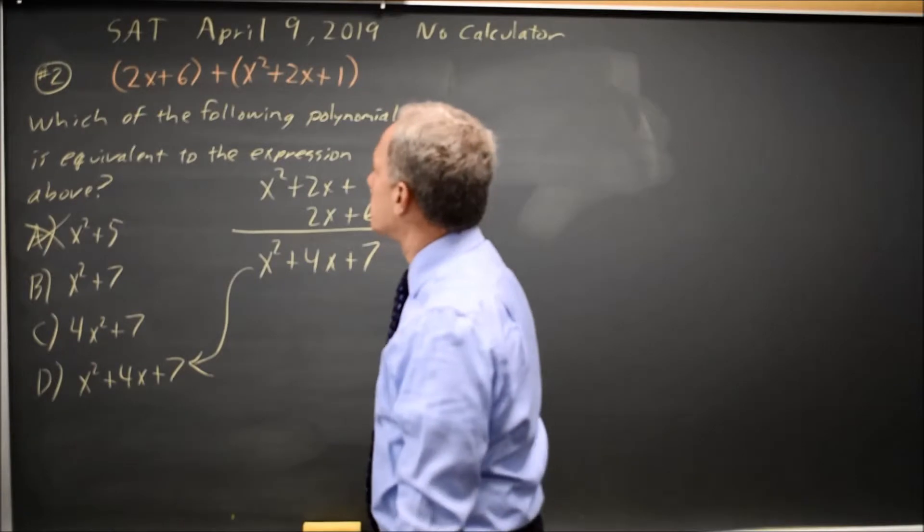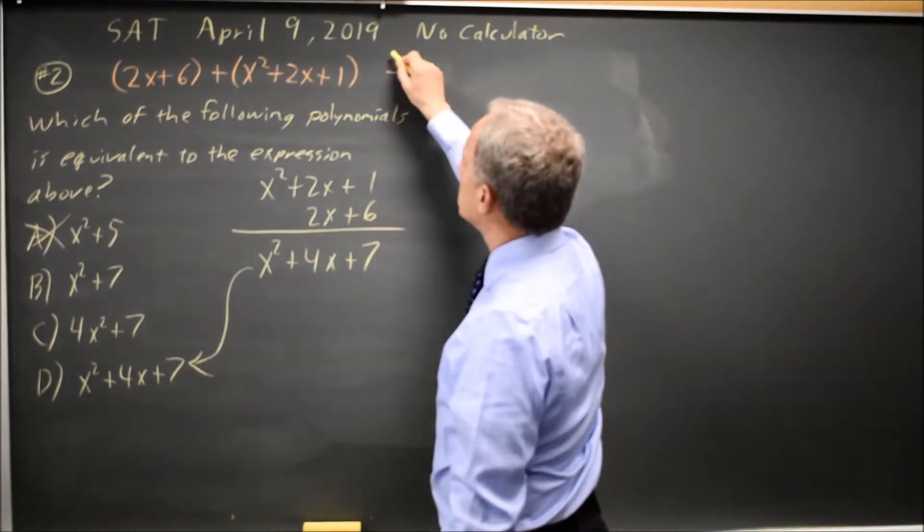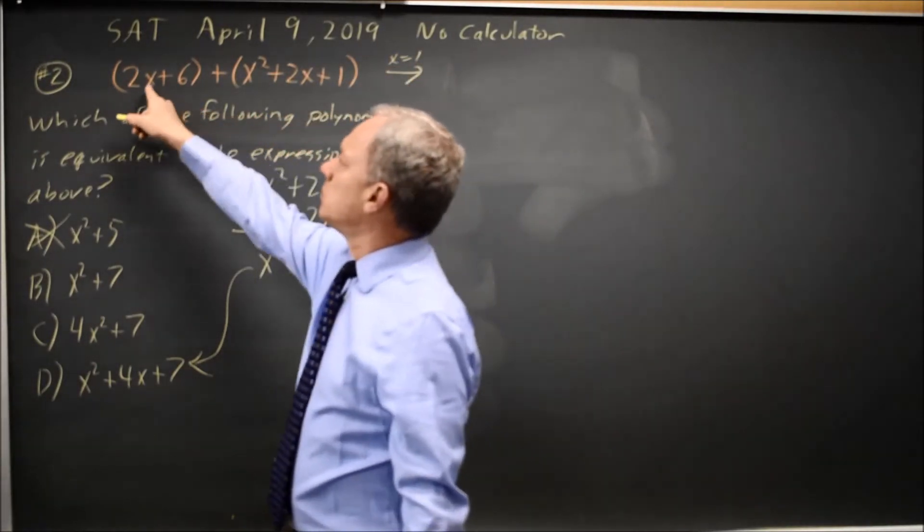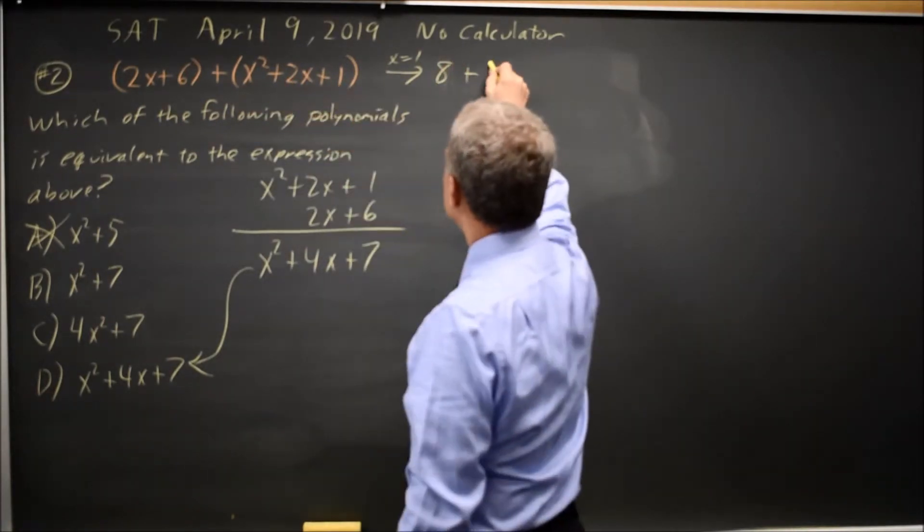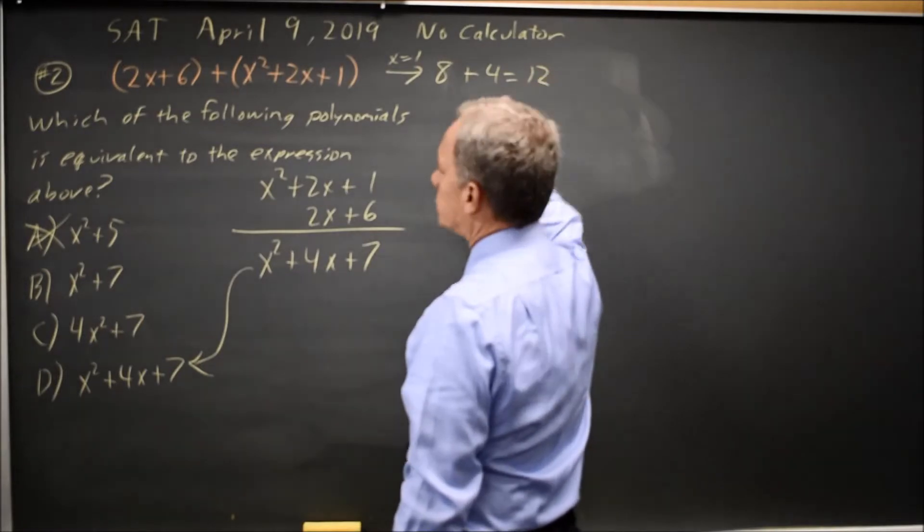Let's try x equals 1. At x equals 1, this is 2 plus 6 is 8. 1 plus 2 plus 1 is 4. Total of 12.